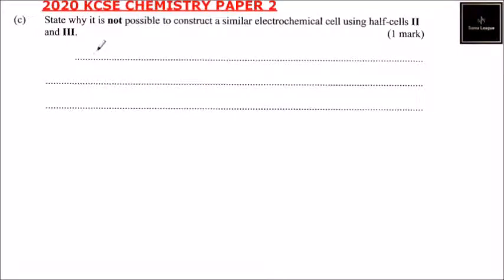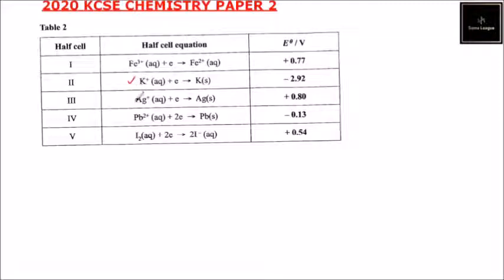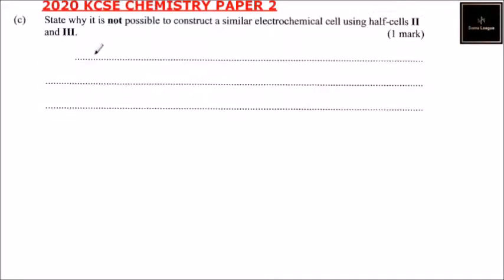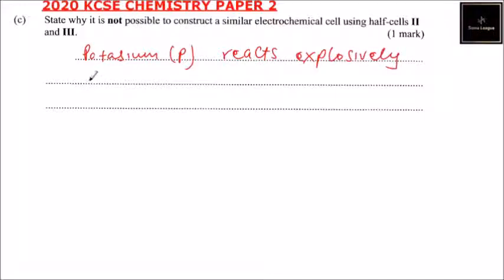Part C: state why it is not possible to construct a similar electrochemical cell using half cells 2 and 3, which are potassium and silver. The reason is that potassium reacts explosively with water, so it is not possible — and not safe — to use potassium in an aqueous electrochemical cell. By stating that, you get one mark.